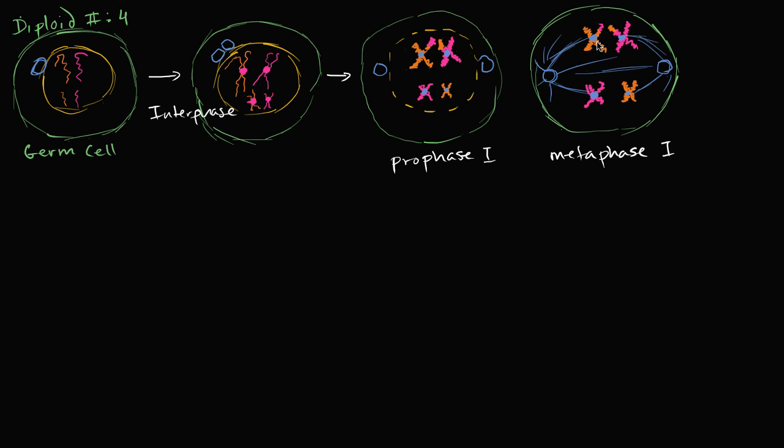And not all of this is completely understood exactly how this works. You have these motor proteins that help move the chromosomes along. These microtubules can elongate and shorten in interesting ways. So it's a really fascinating process. But anyway, this is what's happening in metaphase one.